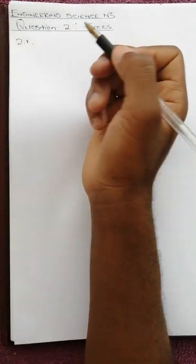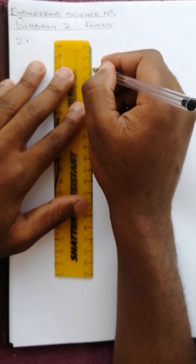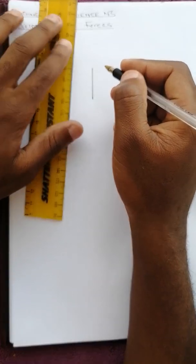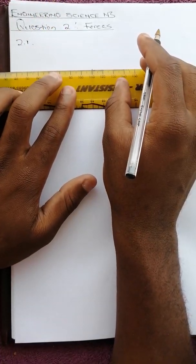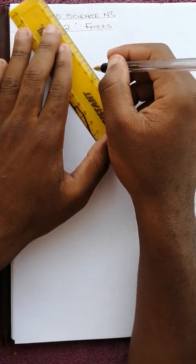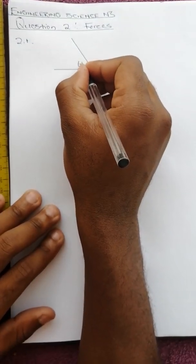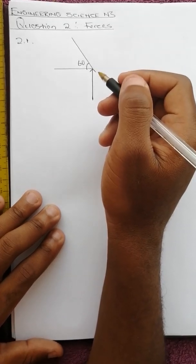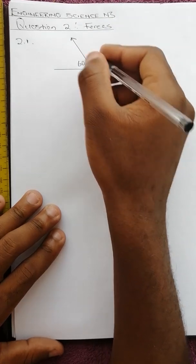We end up with a force acting vertically upwards, another one which is horizontal, and another acting at an angle of 60 degrees. Let's assume this is AB acting that way and AC acting that way.